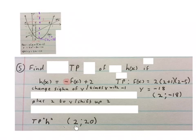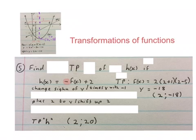Nothing happened to the x. We change the y sign and then we add a 2 to the y value. You can look at the video transformations of functions where this is explained.